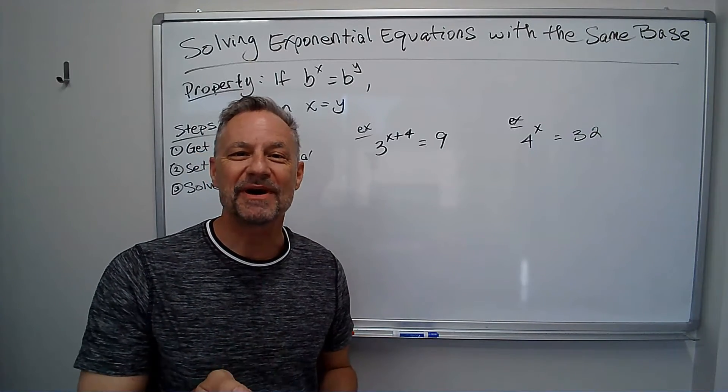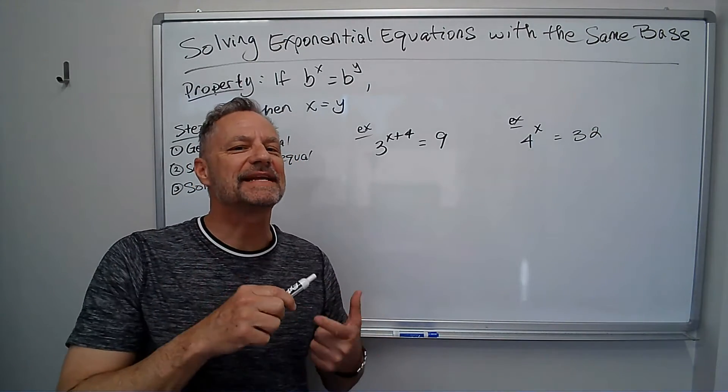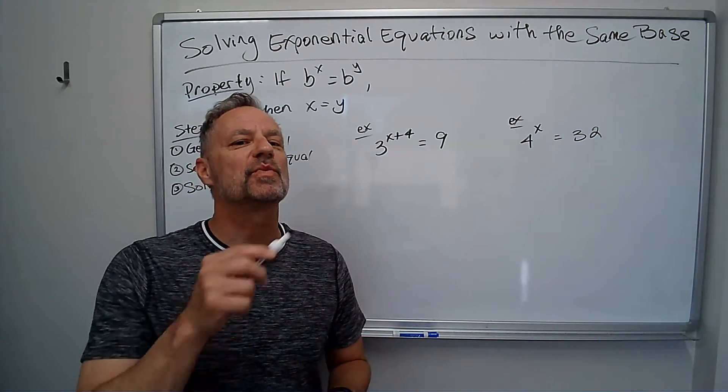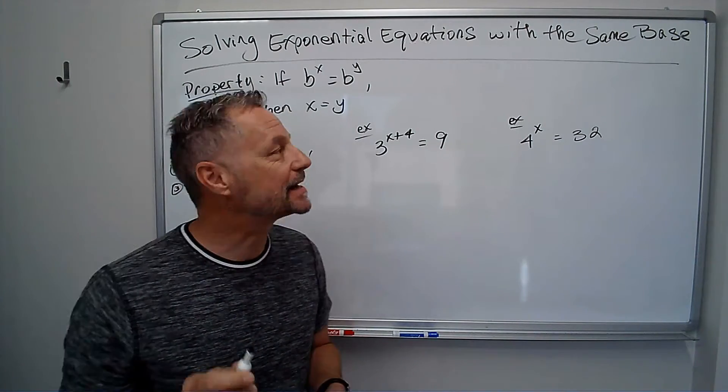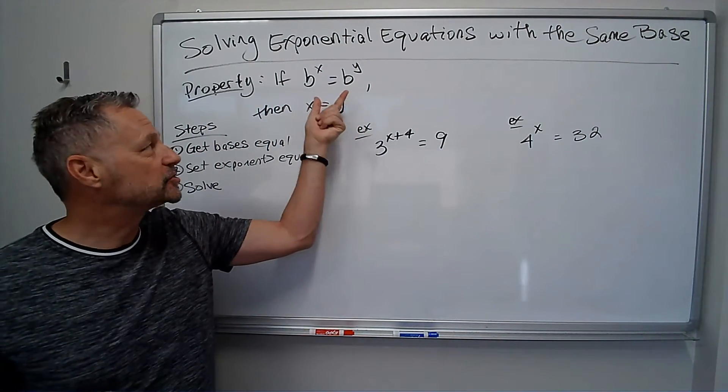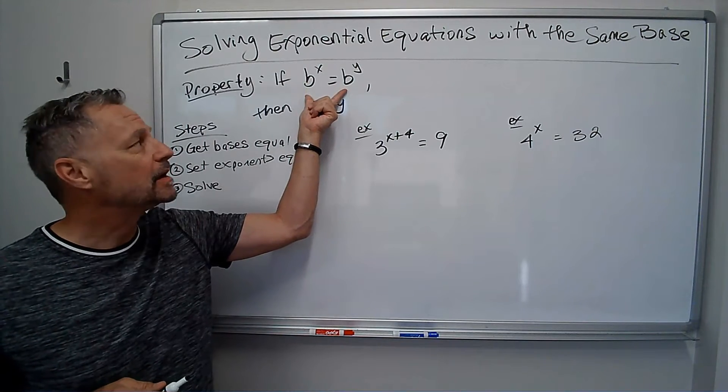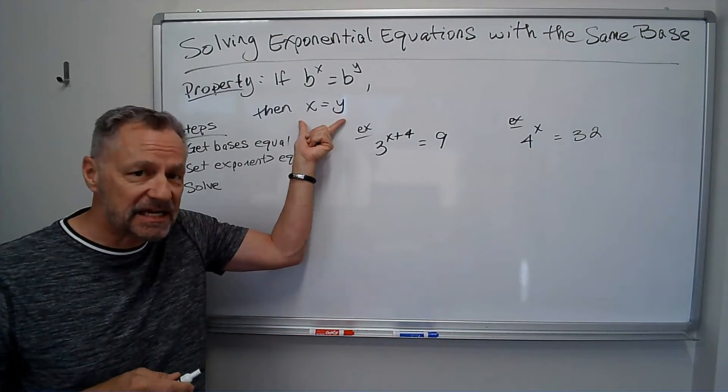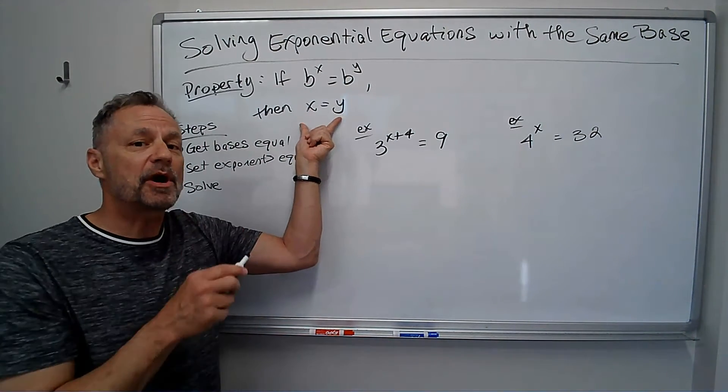Hi there, it's Professor Monte. Let's talk about solving exponential equations when we have the same base. So we've got a property that says if b to the x equals b to the y, so the bases are the same, well if these are equal, the exponents must be the same. And that's the property we're going to use.